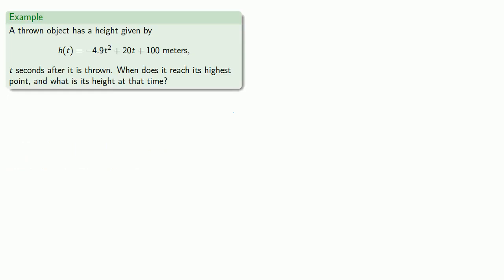For example, a thrown object has a height given by this function t seconds after it's thrown. When does it reach its highest point, and what is its height at that time?